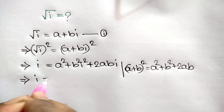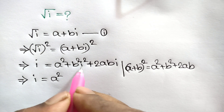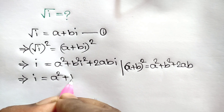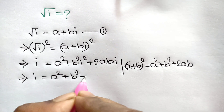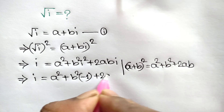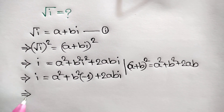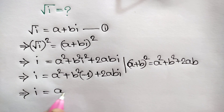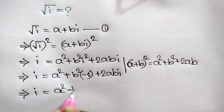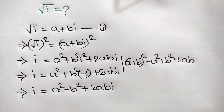We know that i² = −1, so we substitute: i = a² + b²·(−1) + 2ab·i, which gives i = a² − b² + 2ab·i.